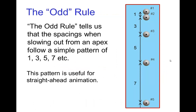For straight-ahead animation of a ball drop, it was mentioned in another tutorial how you could use the odd rule, which tells you there is a simple pattern for the spacings as the motion slows out from the apex. The odd rule is not just for falling motion — there are lots of cases where slowing out or slowing in follows the odd rule, and this is particularly useful for straight-ahead animation.